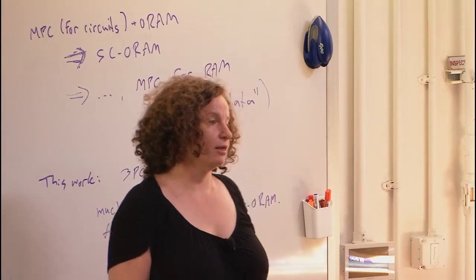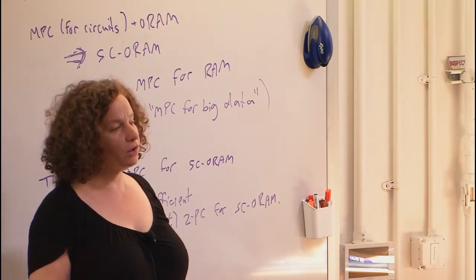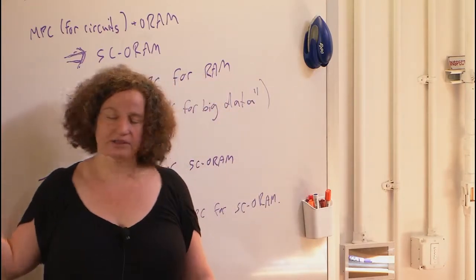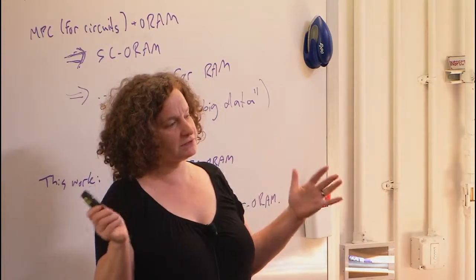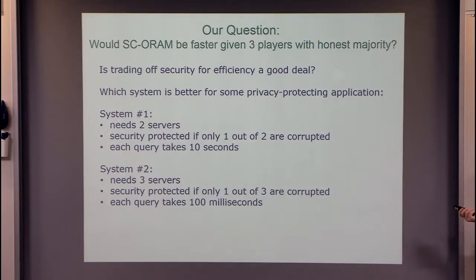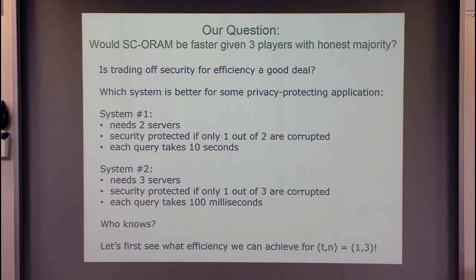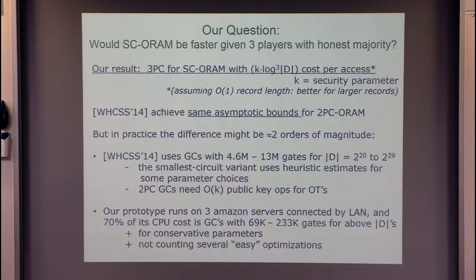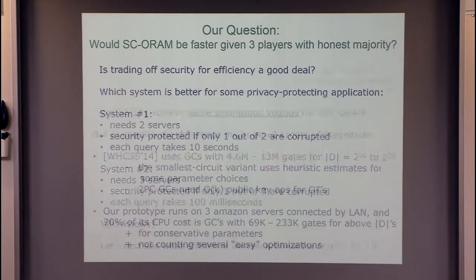P3 will give P1 and P2 this correlated randomness, which is just a random OT. P3 gives P1 some random Z0, Z1, and gives P2 some random bit C and ZC. So it's as if they did OT on random inputs. When the real inputs come, P2 needs to send this XOR, and P1 needs to send those two XORs, and then P2 needs to do one more XOR to recover the message. The point is this is much faster and doesn't require any crypto. It's much faster than doing OT with two parties.